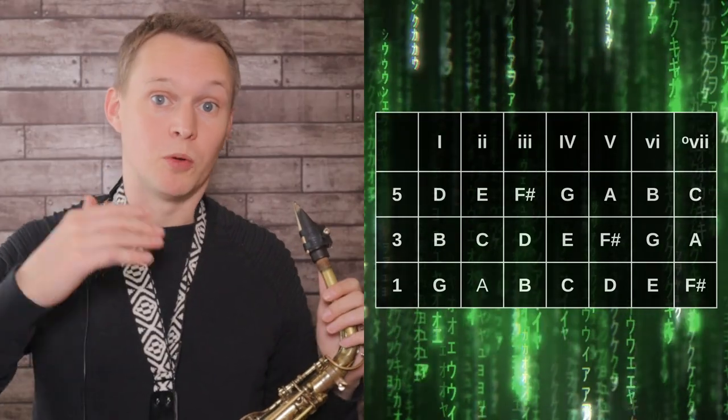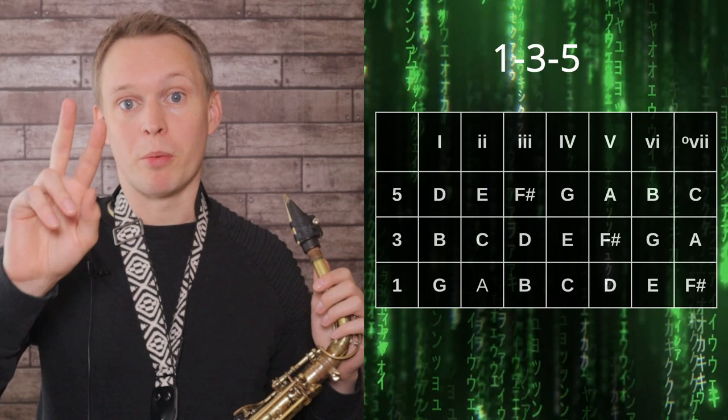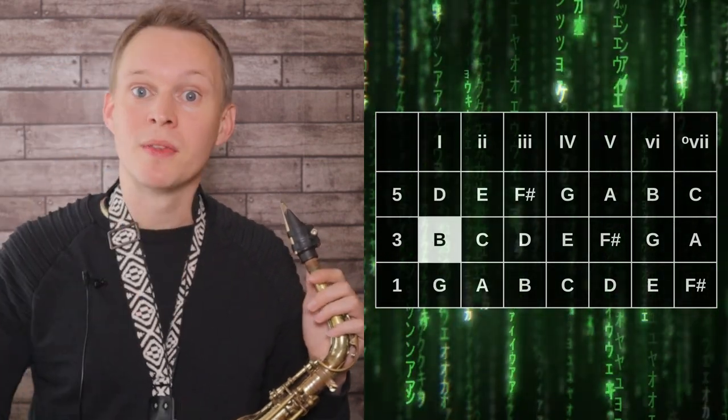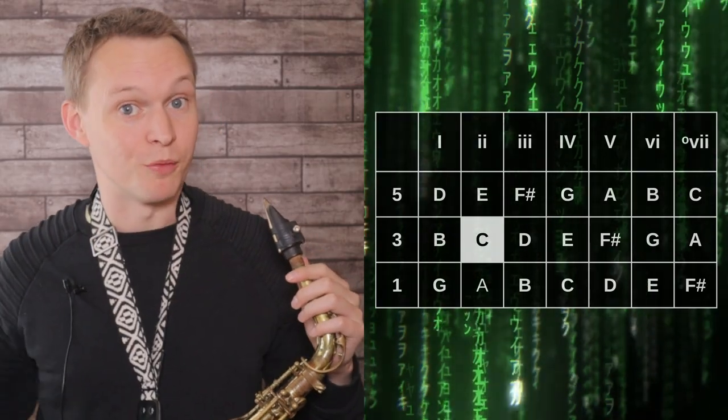Now what we can now do with this matrix is explore the different possible patterns that we can create. So now instead of just going one, three, five, we're going to swap around the three and the five. So now we're going to play one, five, three and we're going to do that along each of the columns. So again you can join in, and that would sound something like this.